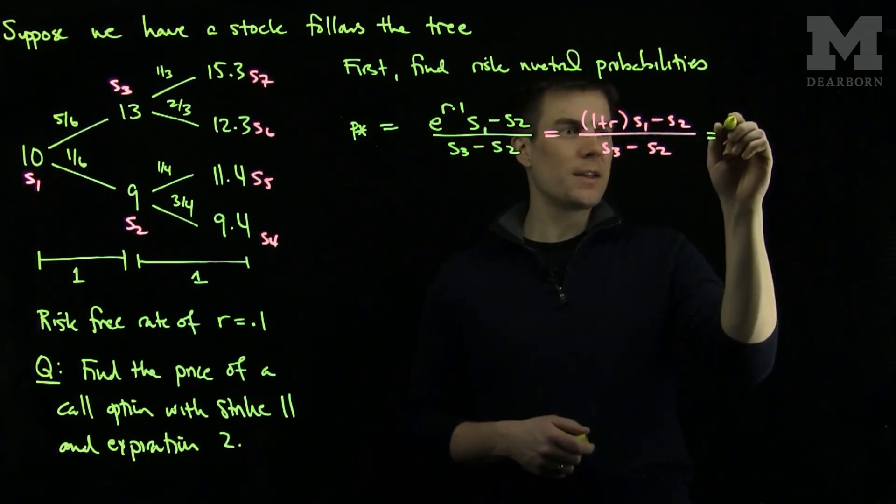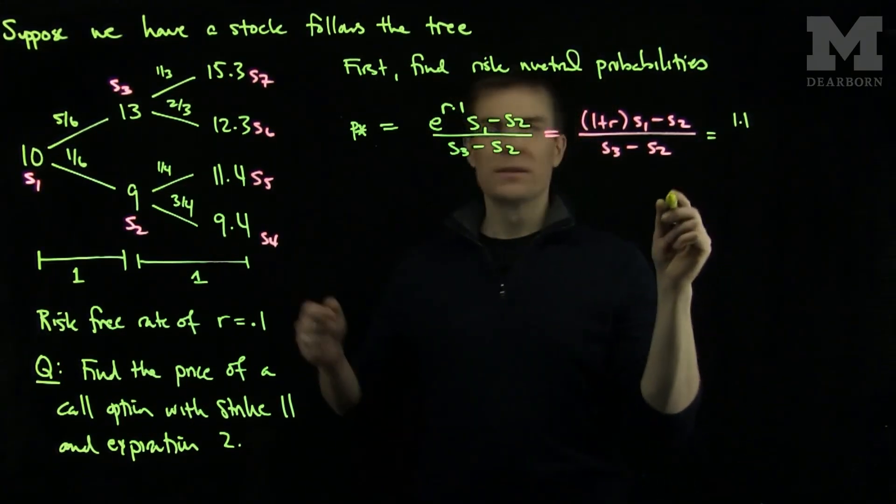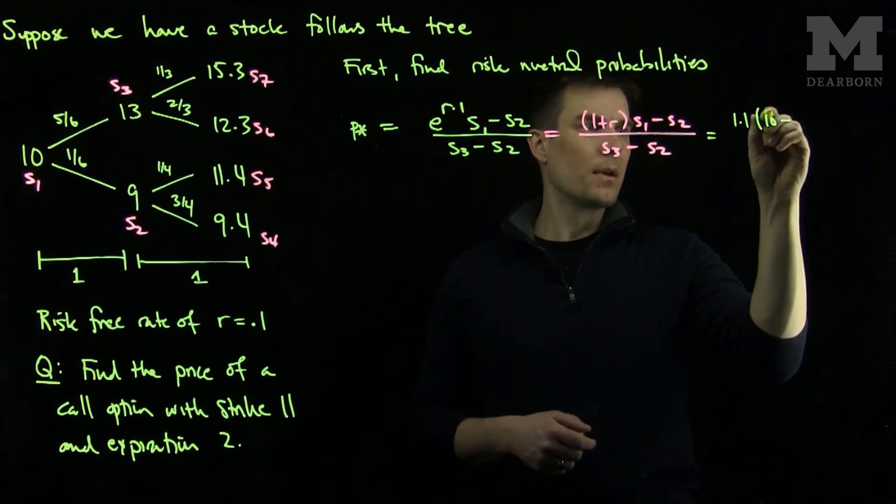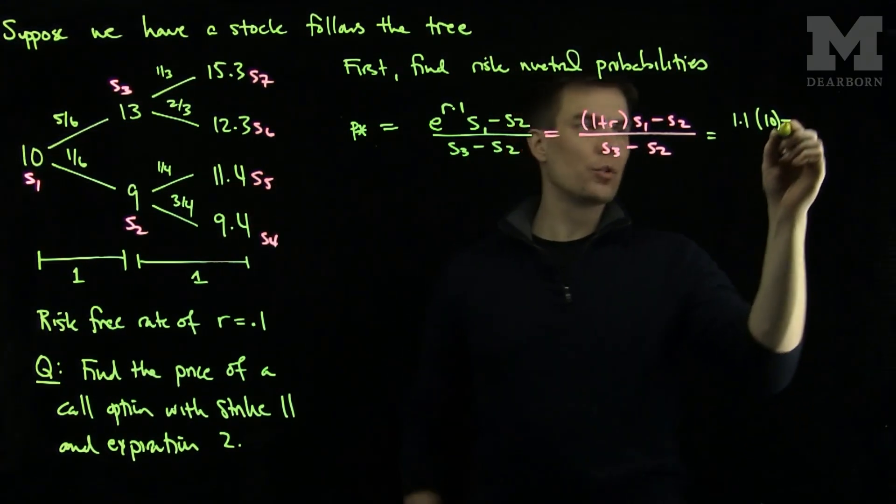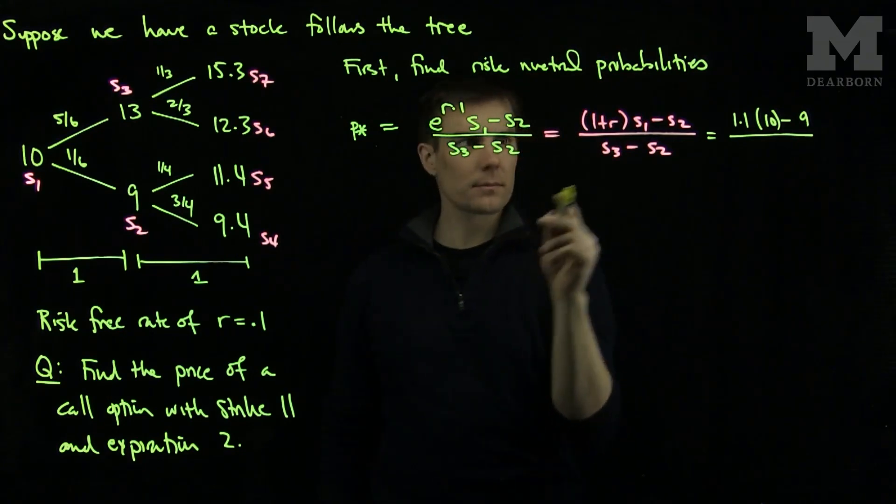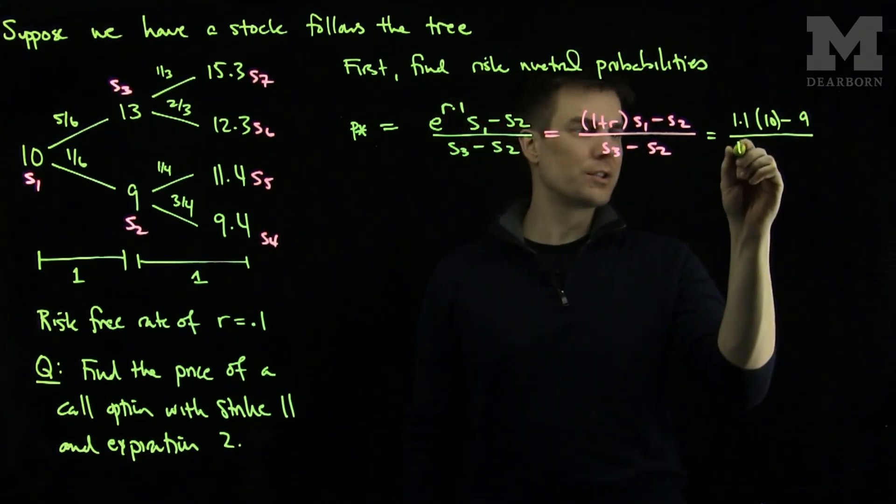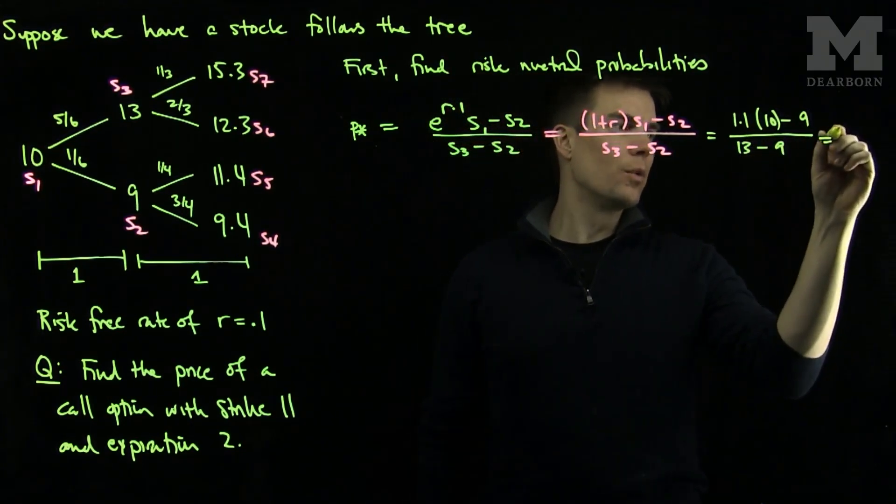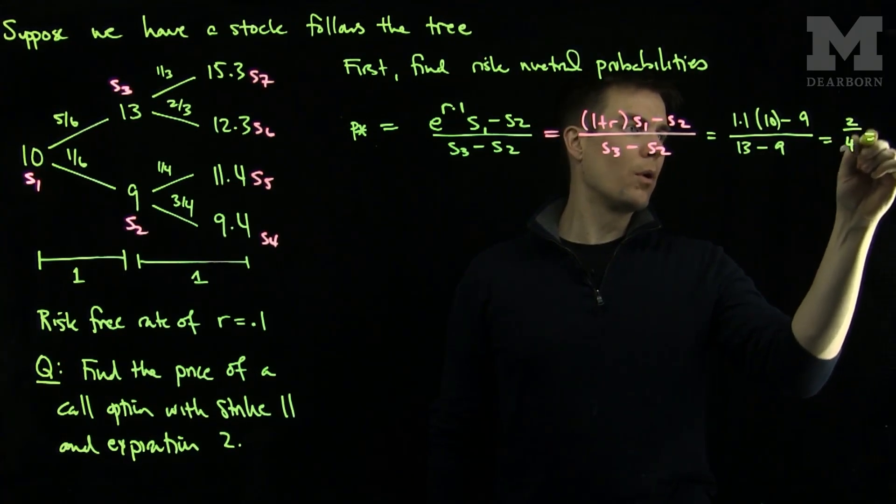So if we simplify this formula we will see that we will have a 1.1 times 10 minus the s2 which will be a 9 all divided by s3 minus s2 which is 13 minus 9 which is going to be 2 over 4 or 1 half.